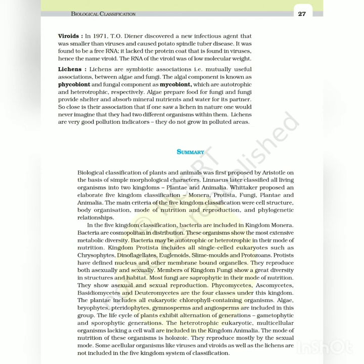The heterotrophic eukaryotic, multicellular organisms lacking a cell wall are included in the Kingdom Animalia. The mode of nutrition of these organisms is holozoic. They reproduce mostly by the sexual mode. Some acellular organisms like viruses and viroids, as well as the lichens, are not included in the five kingdom system of classification.